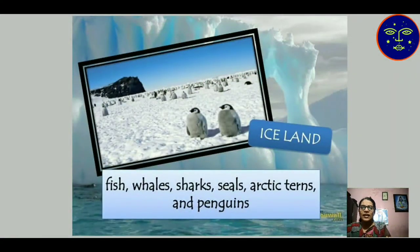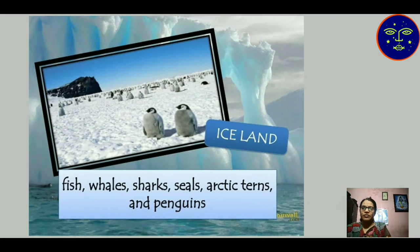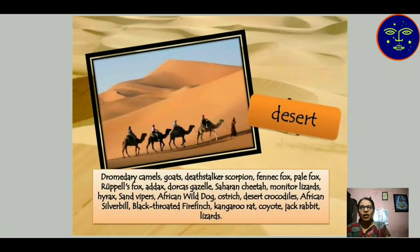Similarly, in an Iceland habitat, fish, whale, shark, seal, and different penguins are living. These organisms have the Iceland habitat. In a desert habitat, camels, fennec fox, pale fox, black-throated sparrow, and lizards are all living together in a desert ecosystem. So, the desert is known as their habitat.